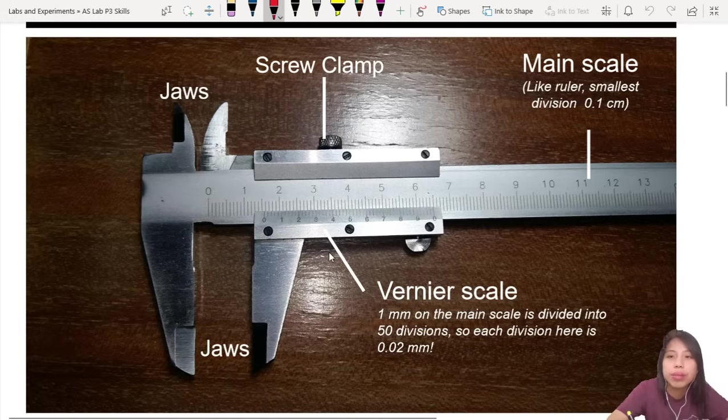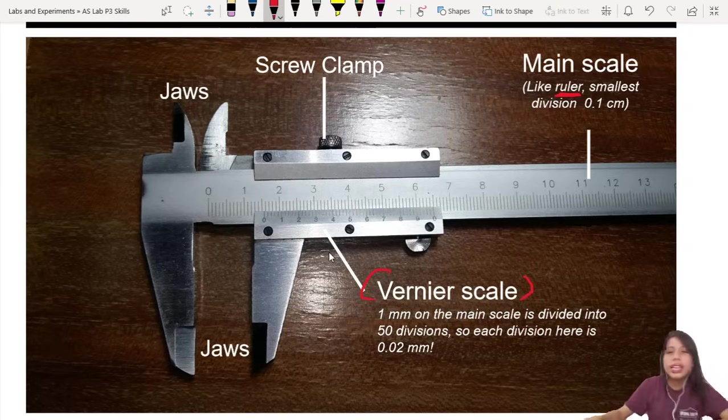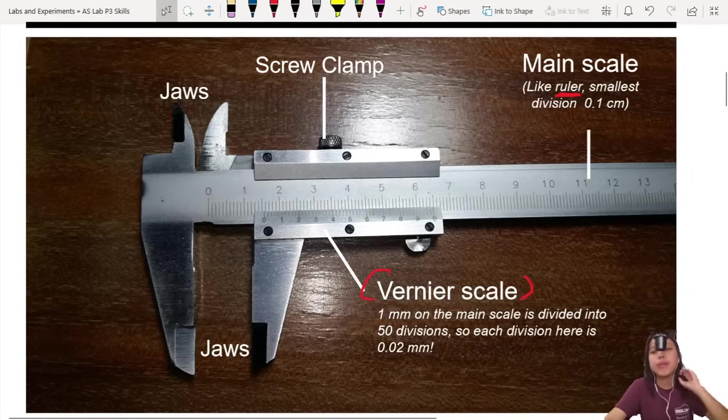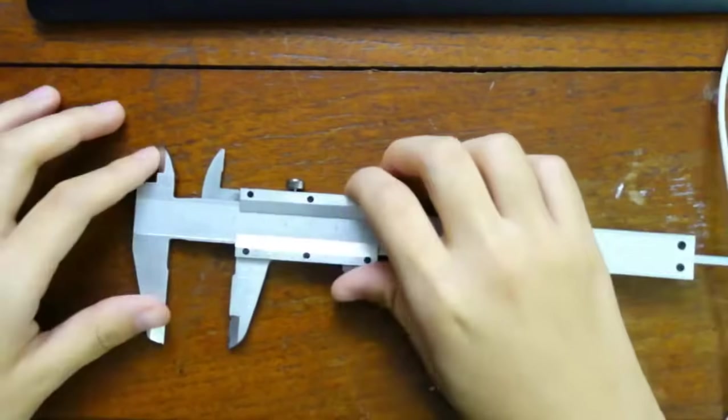Okay this is like your ruler. But the interesting thing is this part, the vernier scale. Where did the vernier scale come from? Wow the person who invented this is very good. So this is how or what is the vernier scale.